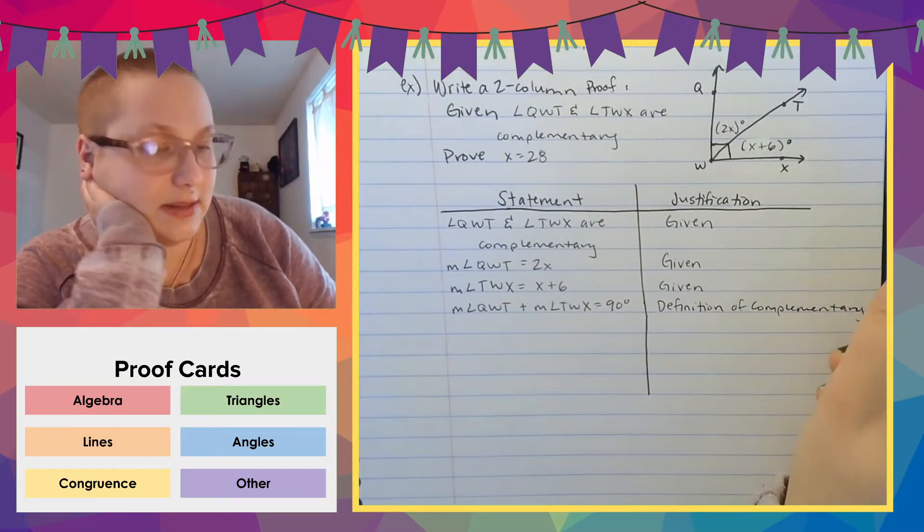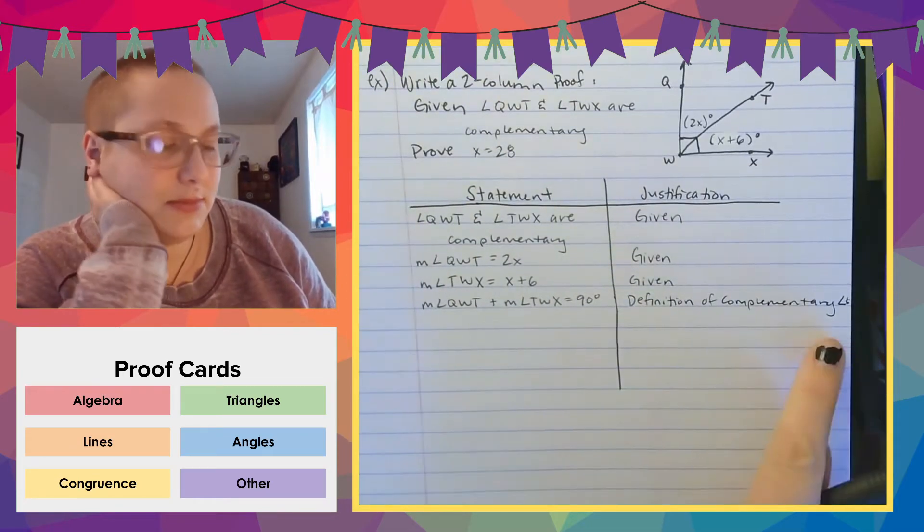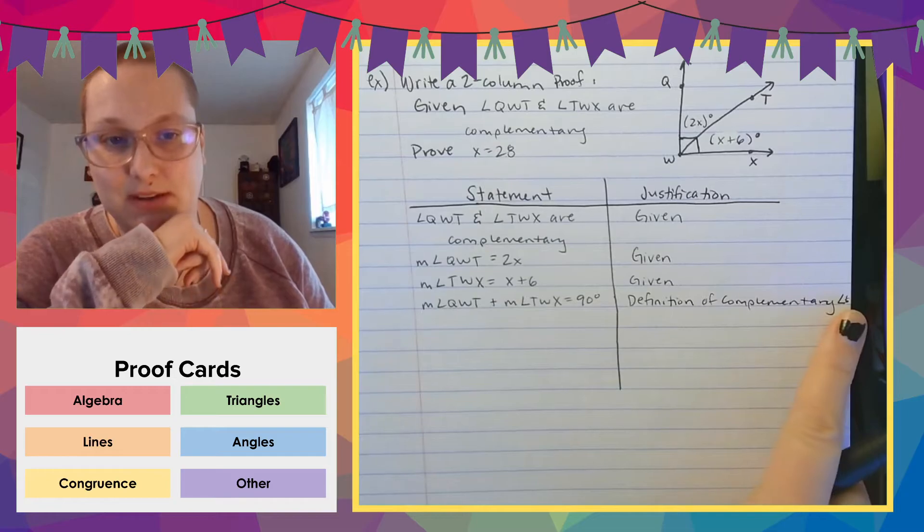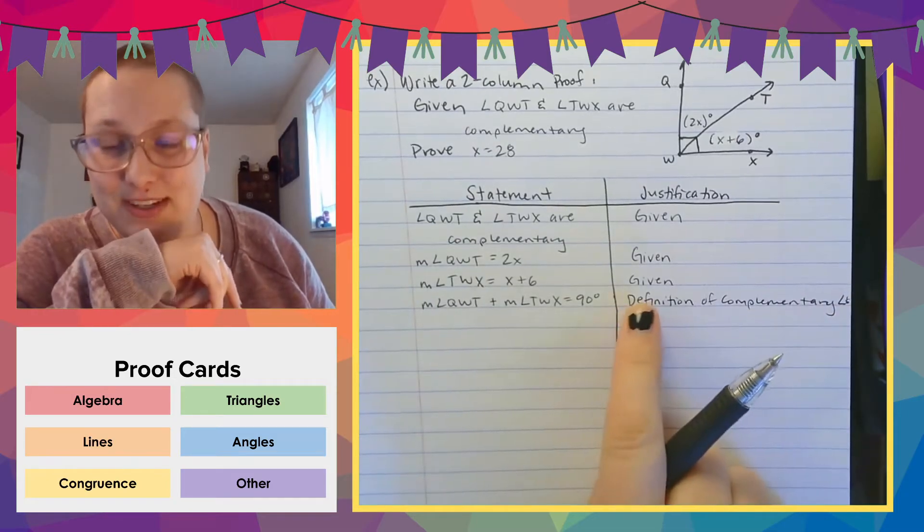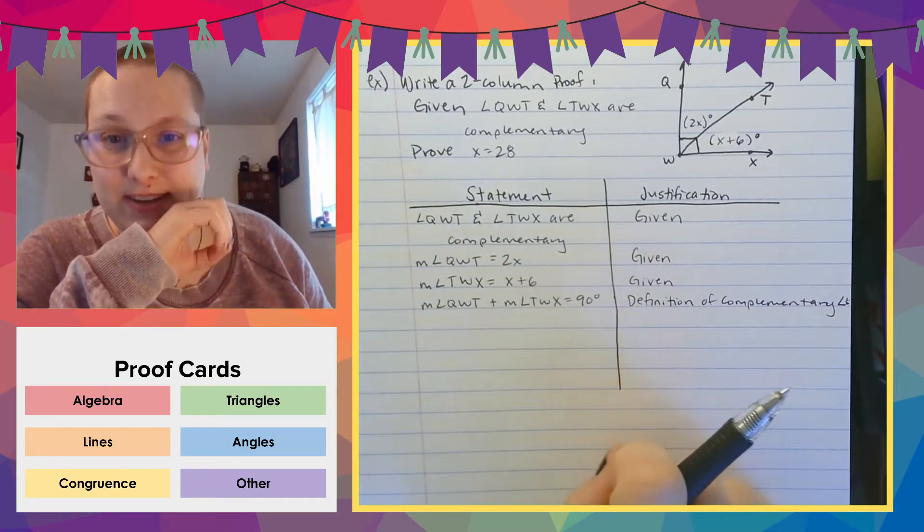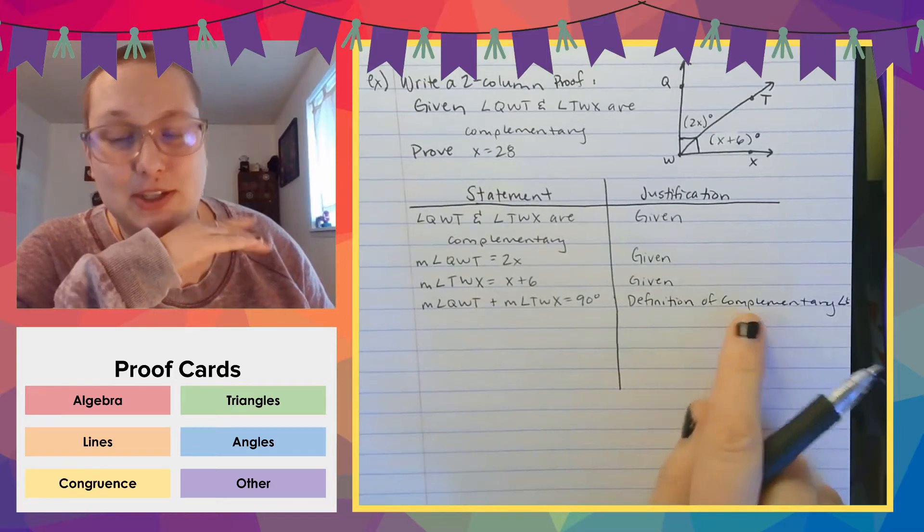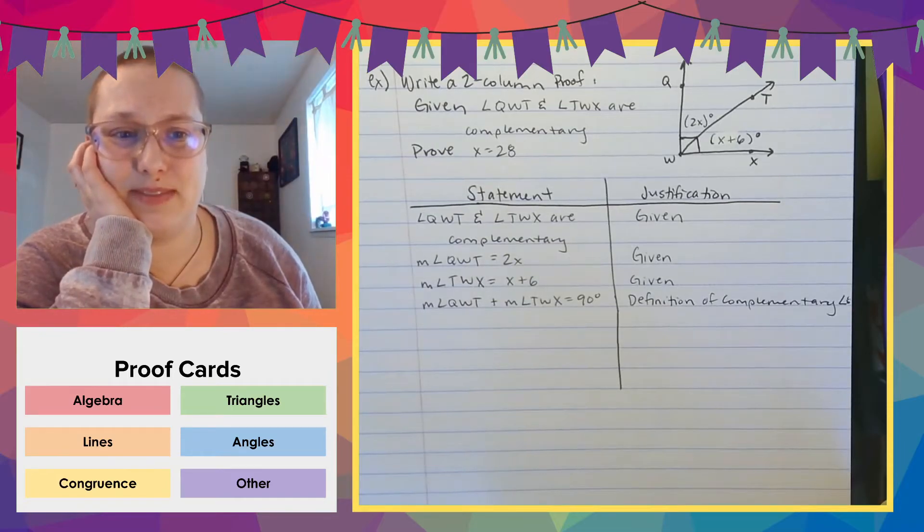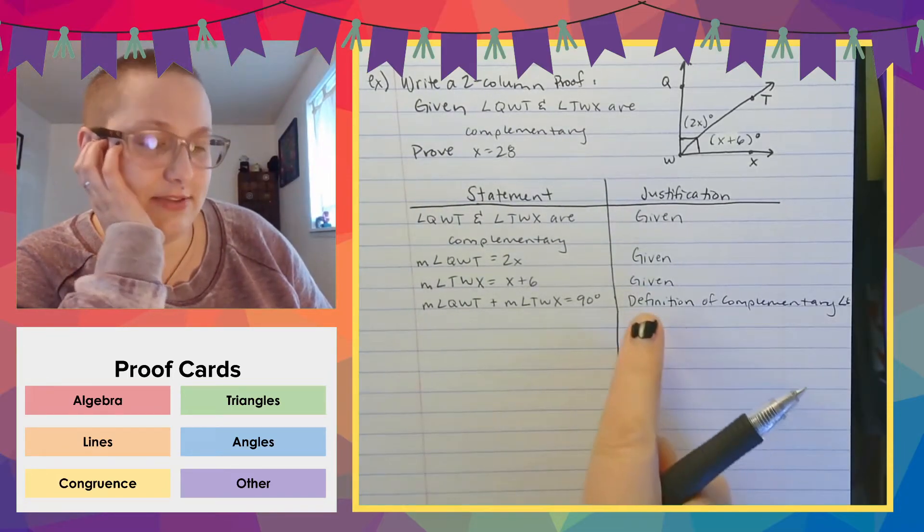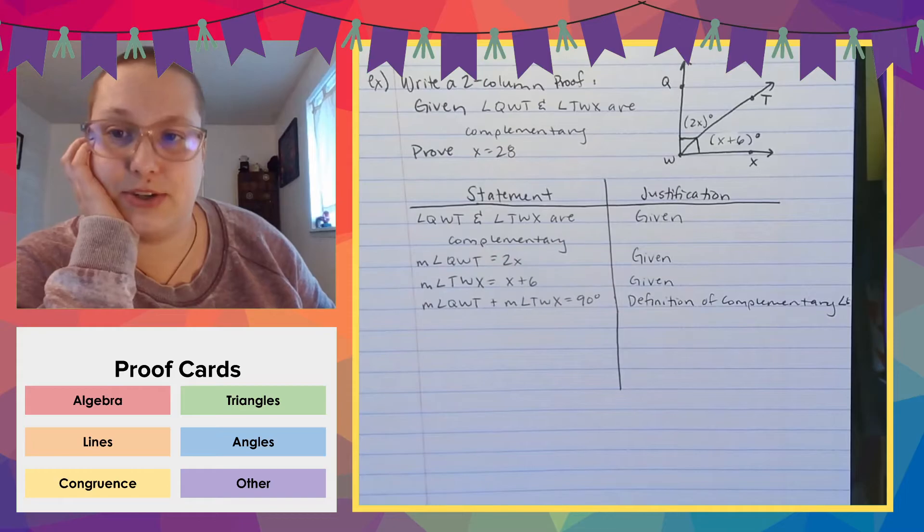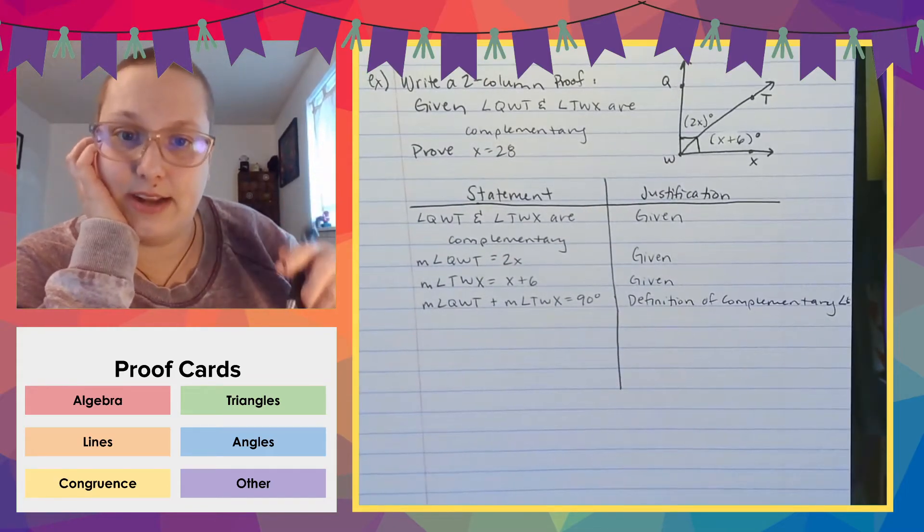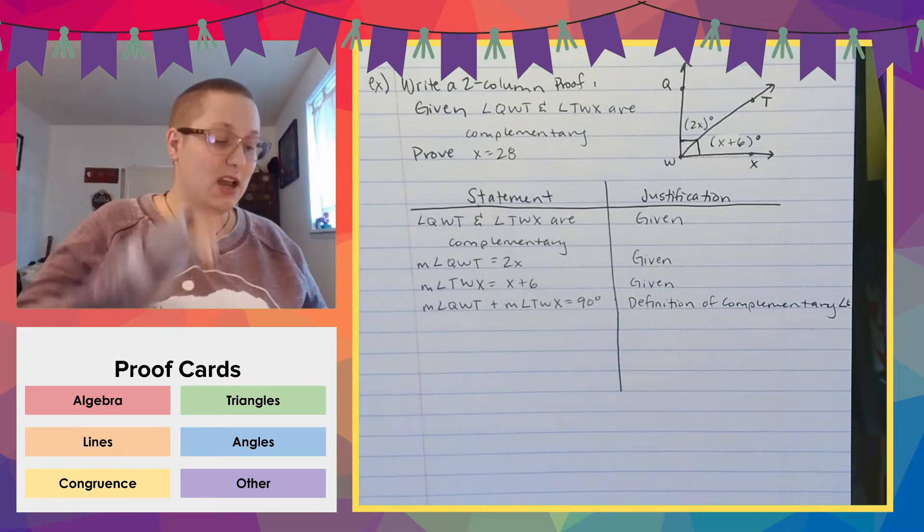So what we're going to say is we're going to say that's the definition of complementary. And then we just do a little angle symbol. There are some symbols that are widely recognized inside of proofs. Angles is one of them. Def, if I shorten this def, it is one of them. Complementary, there's no shortening complementary. I'm so sorry to tell you. We have to write out the whole thing. So you can't say def of com angles. Nobody would understand it, but you can say def of complementary angles with the angle symbol. That's fine.